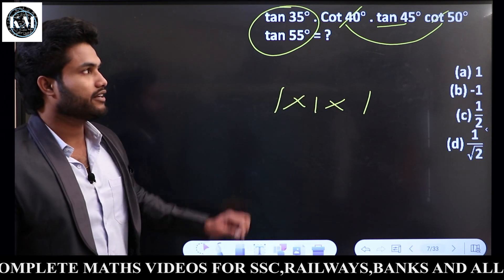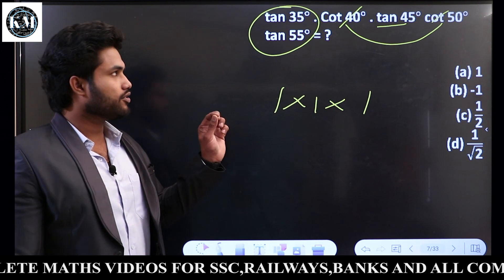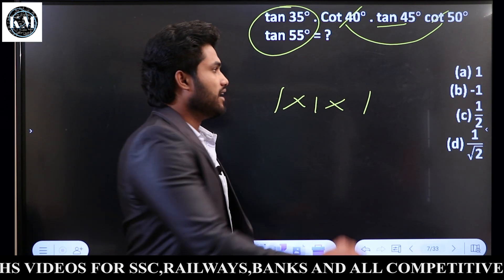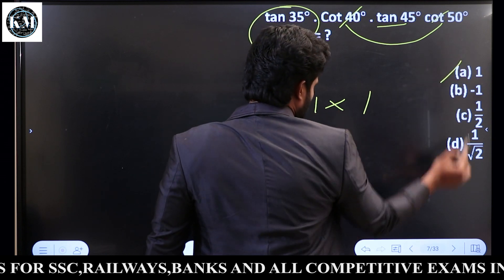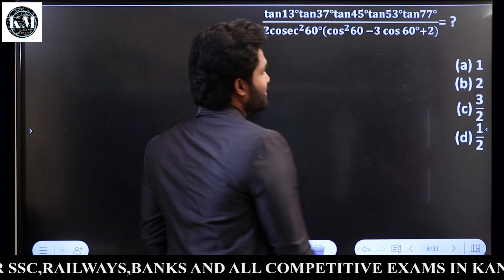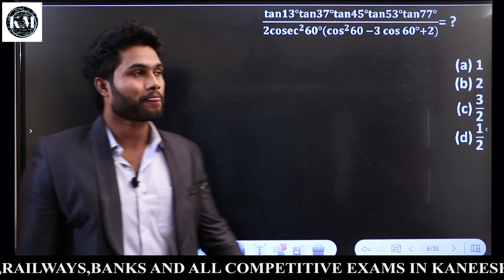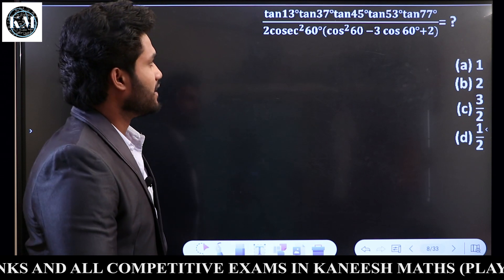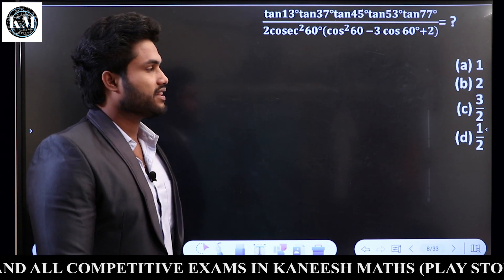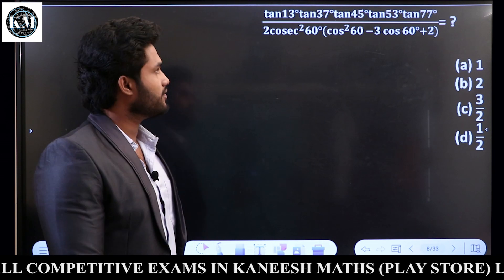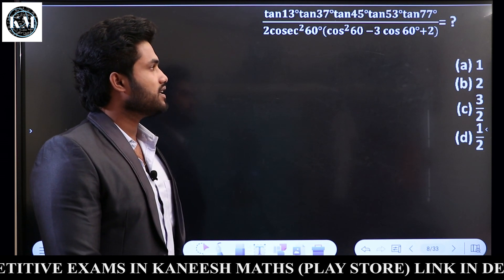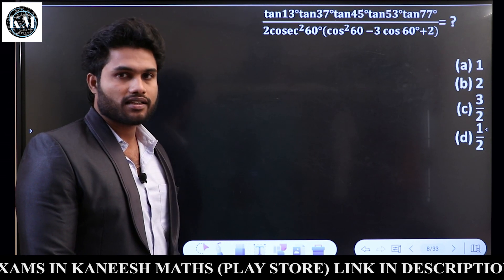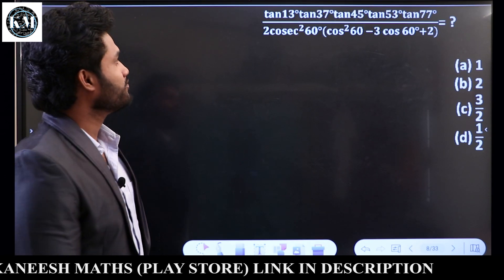Tan 35 × Cot 40 × Tan 45 × Cot 50 × Tan 55 equals 1 × 1 — the answer is Option A. Next sum: Tan 13 × Tan 37 × Tan 45 × Tan 53 × Tan 77 divided by 2 Cos² 60 × Cos² 60 minus 3 Cos 60 plus 2.